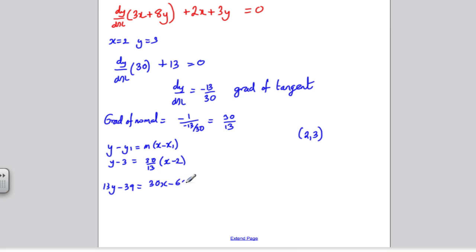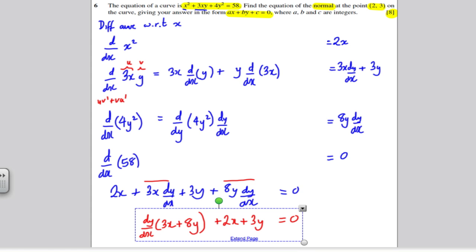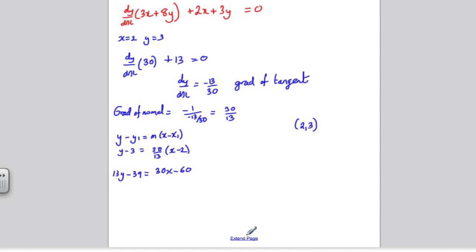And the question asks us in the form ax plus by plus c equals 0, so I'm going to make this side 0, I'm going to say that's 30x subtract 13y, and minus 60 plus 39 is minus 21. And hence, we have found our equation of the normal with a is 30, b is minus 13, and c is minus 21. I hope you found the following useful in your revision of implicit differentiation for Core 4. Thanks for listening.